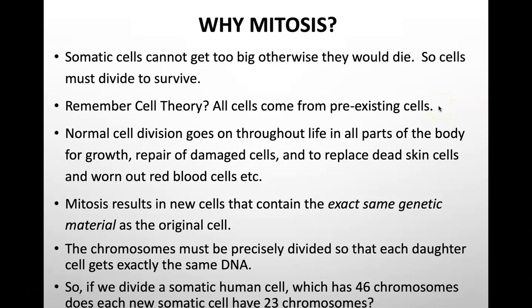Normal cell division goes on throughout life in all parts of your body for growth, repair of damaged cells and also to replace dead cells like the skin cells or the cells of the lining of your gastrointestinal tract and also any worn-up red blood cells. Mitosis results in new cells that contain the exact same genetic material as the original cell. It's no use having the cells of your body completely different to each other. They've got to have the same exact genetic material and therefore the genes inside those cells can be expressed in the same way, or at least in the same way as each specialized cell might be.